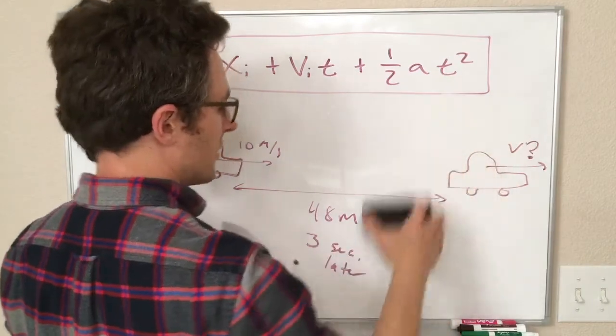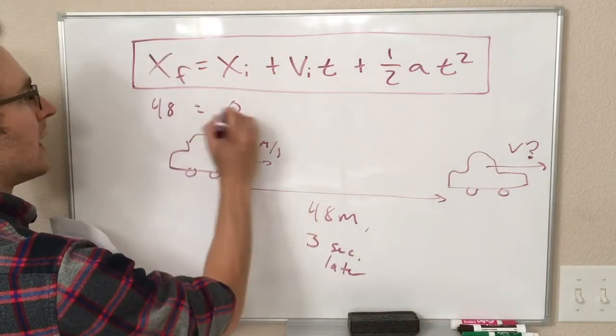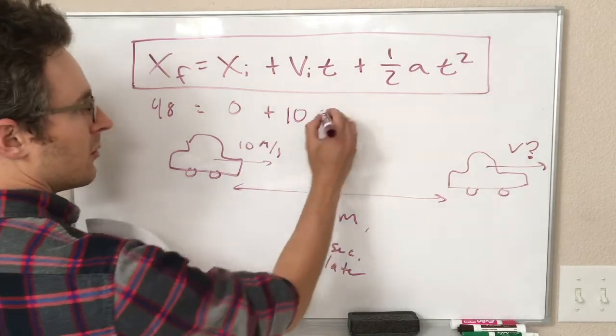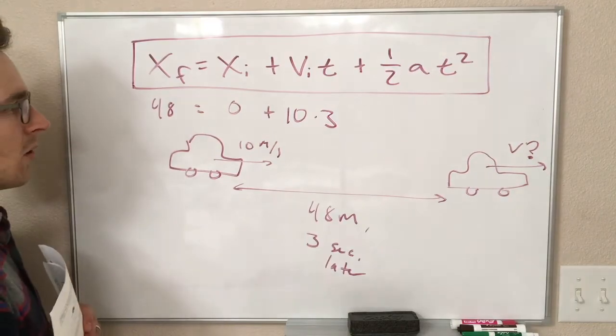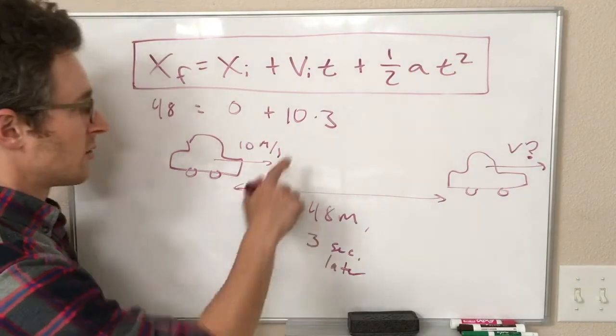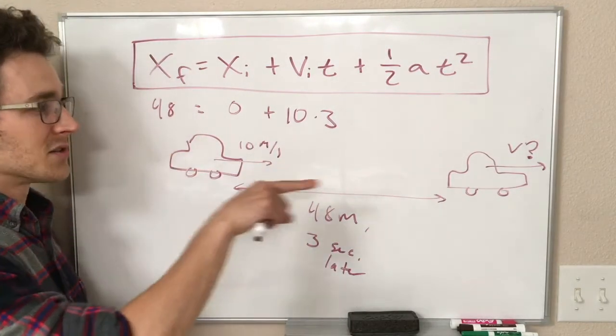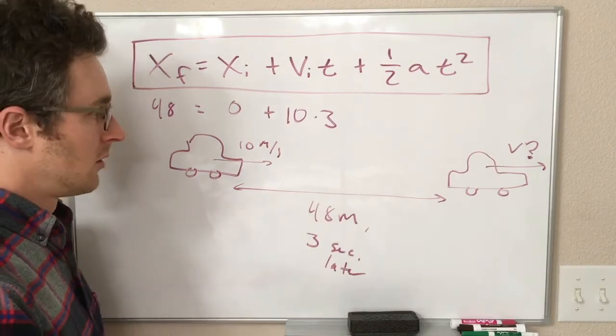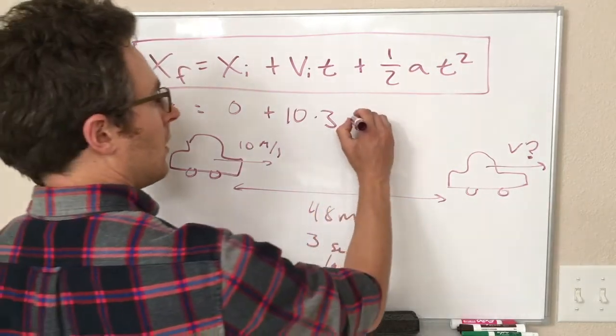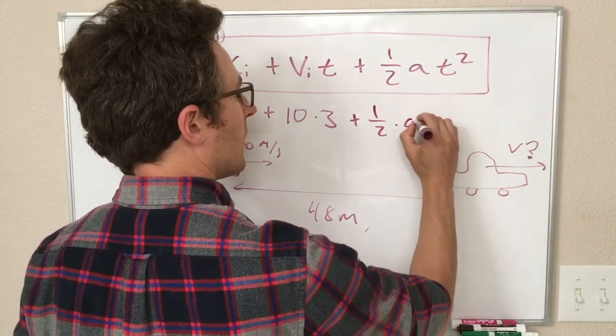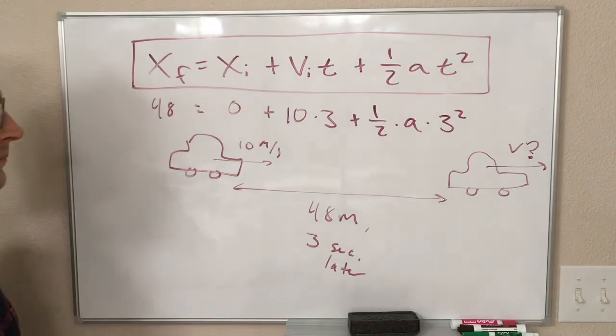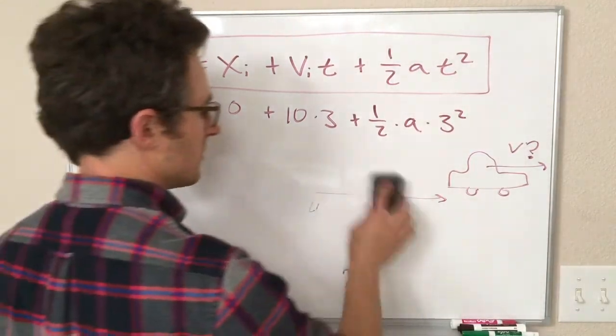Okay, so x initial is 0. x final is 48. Our initial velocity is 10 meters per second. Our time is 3 seconds. So note right here, if there was no acceleration, we only would have gone 30 meters. So the fact that we went further than that, 48 meters, means that we had some acceleration to the right. So before we do anything else, we should see we expect a positive number for a. 1 half times a times t squared, which is 3 squared, which is 9. And I'm gonna erase the picture now, and we'll just do a little bit of math.